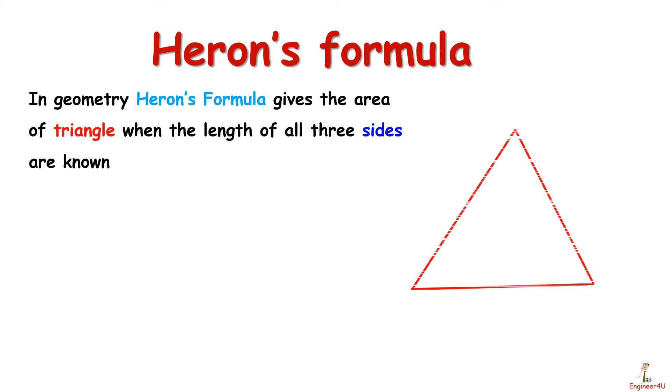For example, if we have a triangle with sides A, B, and C, then its area will be equal to √S times (S minus A) times (S minus B) times (S minus C).